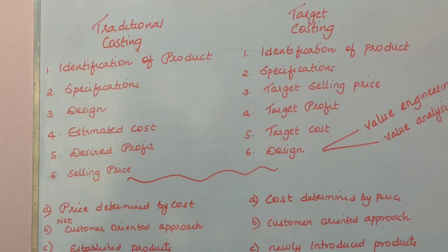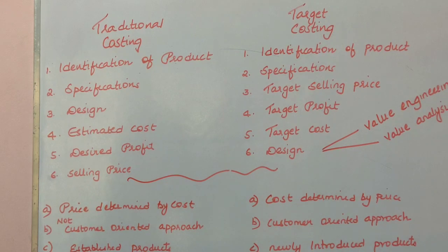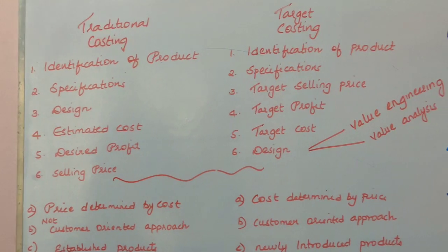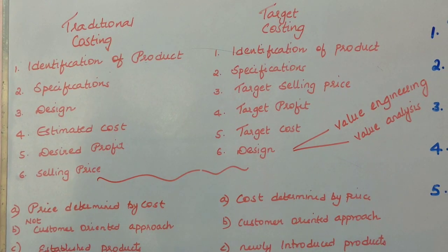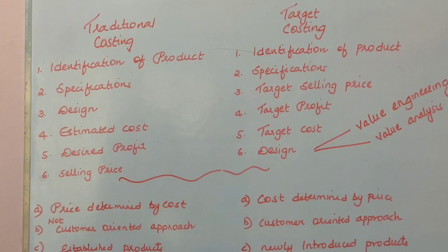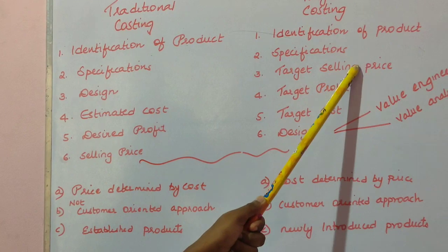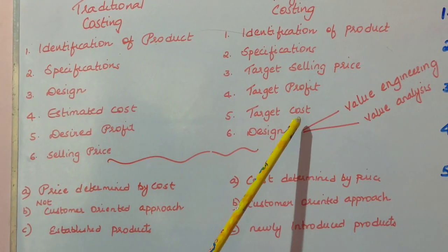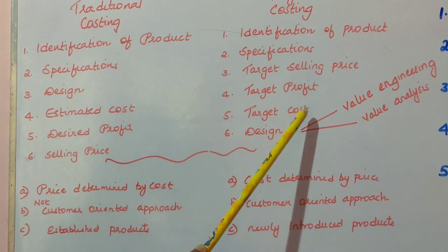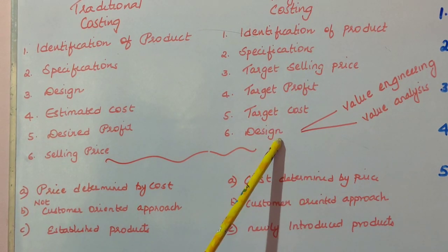Target costing is costing from the customer's perspective. In the process of target costing: the product is identified, specifications are designed, target selling price is decided on the basis of customers, target profit is decided based on what the company wants, and if you subtract the target profit from the selling price, you get the target cost. Based on this target cost, the company starts to manufacture.